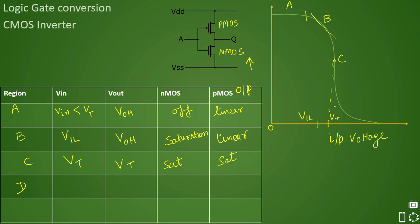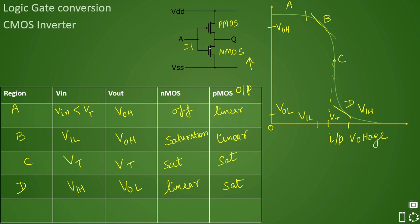Region D: the input voltage is approaching VIH — nearly the high voltage level. The output voltage is now VOL, going toward the low side. The NMOS is now in the linear region while the PMOS moves toward saturation and starts turning off. The output is going low because the NMOS is discharging the output and the PMOS is turning off.